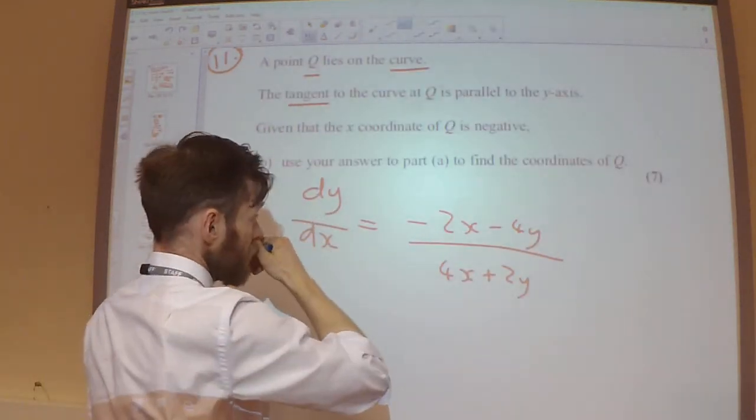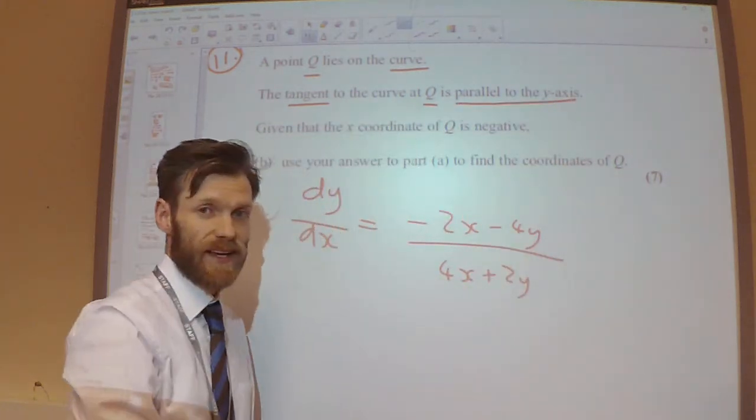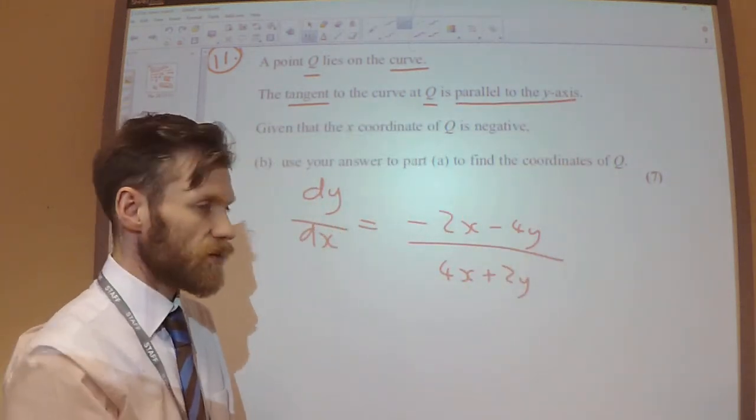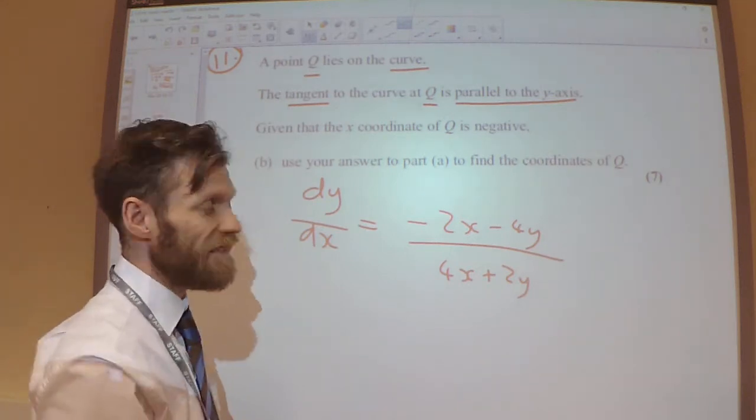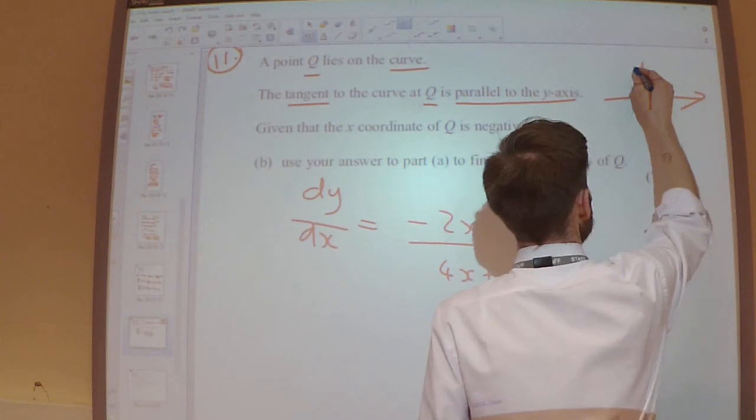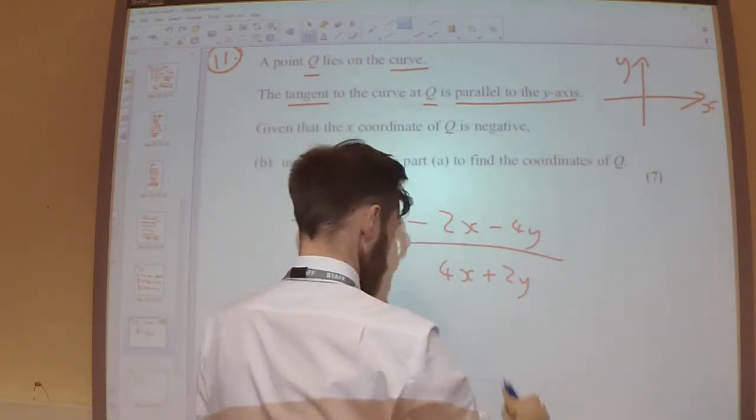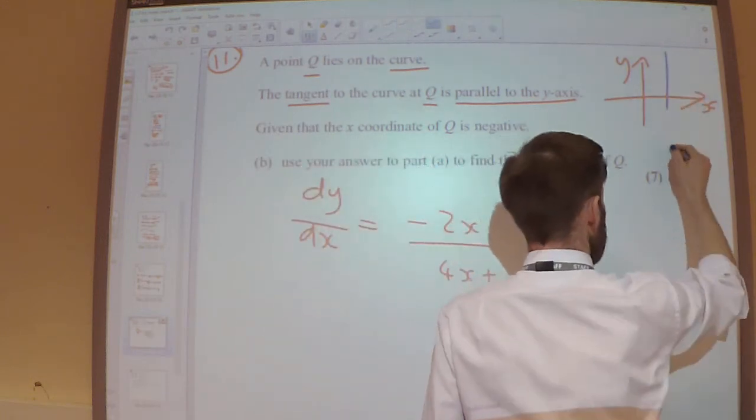The tangent to the curve at Q is parallel to the y-axis. So what does that mean, the tangent is parallel to the y-axis? So I've got my axes like that. Parallel to the y-axis means the tangent looks like that, or something similar.